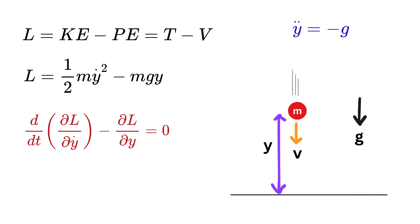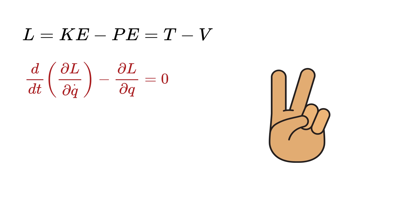This is the magical moment: without ever talking about forces, we arrived straight at the same law of free fall that Newton gave us. The acceleration y-double-dot comes out as a constant minus g, which means every object, no matter its mass, falls with the same acceleration.